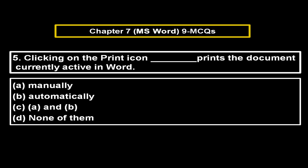Clicking on the print icon dash — prints the document currently active in Word. Option A: Manually. Option B: Automatically. Option C: A and B. Option D: None of them. The right answer is Option C — A and B.